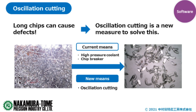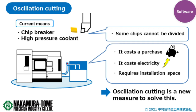We all hate long chips, don't we? They can get tangled in the tool and become an obstacle to automation. Chips that look like bird's nests can clog the conveyor and cause it to malfunction. Originally, chips were broken up using high pressure coolant and chip breakers, but now a new option has been added.